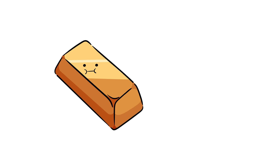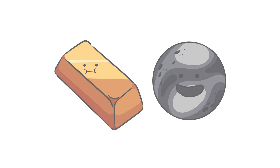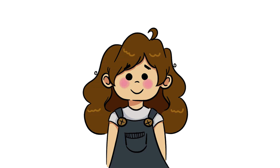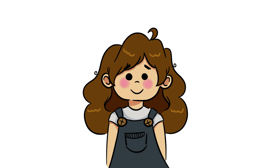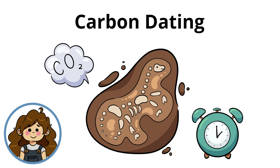Going back to our last example, if you subtract one proton from a gold atom, you get platinum. On the other hand, if you add or subtract a neutron from the nucleus of an atom, then a new element isn't created, but rather a new isotope. For example, carbon-14 is an isotope of carbon and contains two extra neutrons. Isotopes like carbon-14 are useful for scientists for a multitude of purposes. In fact, this isotope is radioactive and used to date historical items in a process called carbon dating.